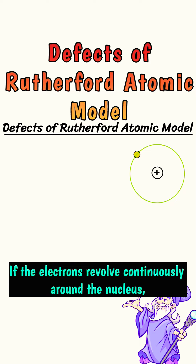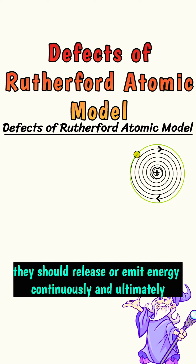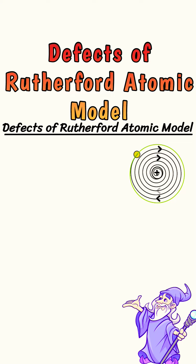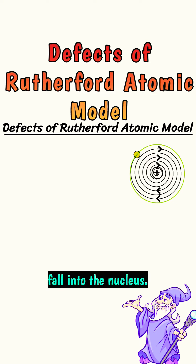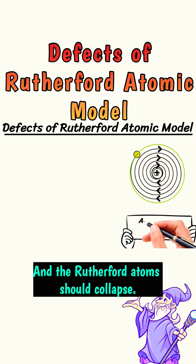If the electrons revolve continuously around the nucleus, they should release or emit energy continuously and ultimately fall into the nucleus, and the Rutherford atom should collapse.